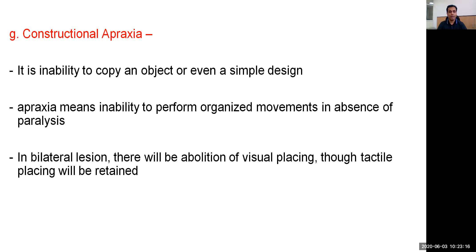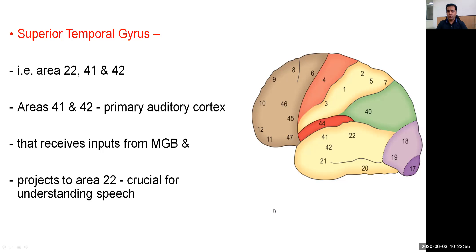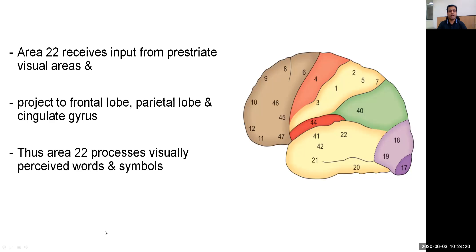After the parietal lobe, let us now discuss the temporal lobe. It has three divisions: superior temporal gyrus, middle temporal gyrus or inferior temporal gyrus, and the mediobasal portion of the temporal lobe. The superior temporal gyrus includes areas 22, 41, and 42. Areas 41 and 42 are the primary auditory cortex, receiving input from the medial geniculate body and projecting to area 22, which is crucial for understanding speech. Area 22 receives input from peristriate visual areas and projects to the frontal lobe, parietal lobe, and cingulate gyrus, thus processing visually perceived words and symbols.